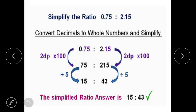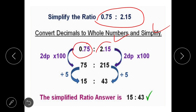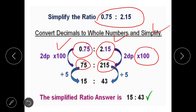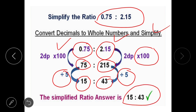If there are decimal numbers in a ratio, first convert the decimals to whole numbers and then simplify. For example, 0.75 to 2.15 — since there are two decimal places, multiply both terms by 100. We get 75 to 215. The GCF of 75 and 215 is 5. Dividing both by 5 gives 15 to 43. So the simplified ratio is 15 to 43. This is how we simplify ratios that contain decimal numbers.